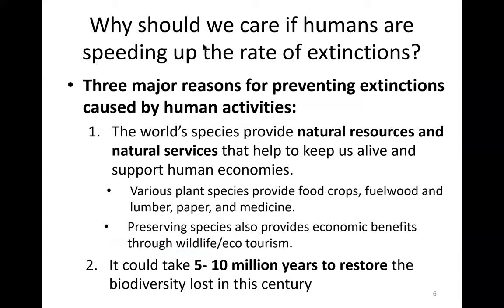Why should we care if humans are speeding up the rate of extinctions? There are three major reasons. First, the world's species provide natural resources and natural services that help keep us alive and support human economies. For example, many plant species provide food, crops, fuel, wood, lumber, paper, and medicine. Preserving species also provides economic benefits through ecotourism and wildlife.